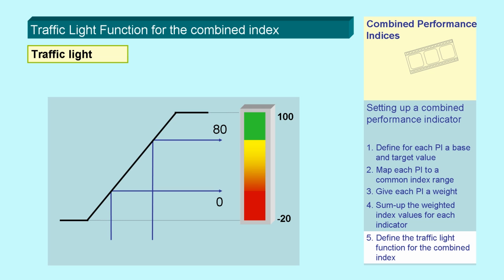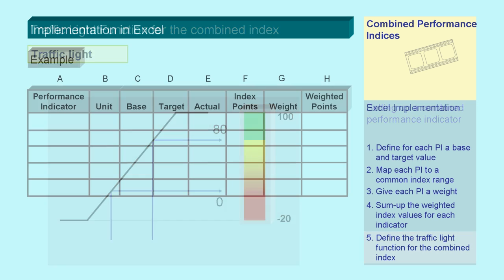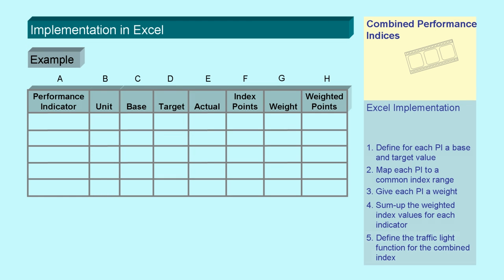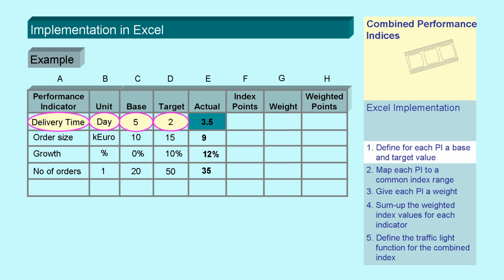The whole procedure can be easily realized in a spreadsheet. We use a table with eight columns. The first column gives the name for each performance indicator used in the calculation of the combined index. Then we write down the unit, if any, and the base, target, and actual values. We do this for all individual indicators.